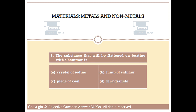Question number two. The substance that will be flattened on beating with a hammer is: Option A: Crystal of iodine. Option B: Lump of sulfur. Option C: Piece of coal. Option D: Zinc granule.